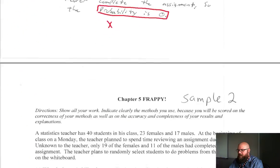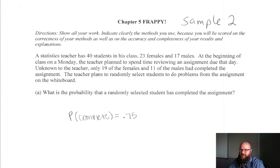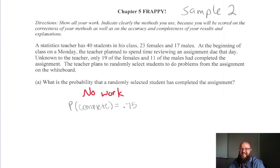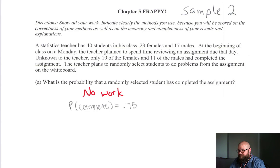Let's look at Sample 2. Same problem, moving forward. For Part A — the probability that a randomly selected student completed the assignment — they got the setup and wrote probability complete equals 0.75. But for AP graders, they don't like that. Just throwing in the answer with no work is a problem. You need to show how you came up with it, because there's no way to tell you know what you're doing if you don't show the work.